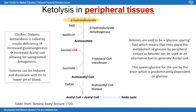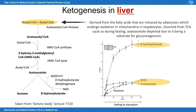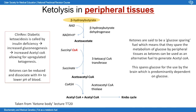A key clinical relevance here is diabetic ketoacidosis (DKA), which occurs in insulin deficiency. Low insulin increases the rate of gluconeogenesis, shunting more acetyl-CoA into the ketogenesis pathway. Increased ketogenesis means more ketones accumulate in the blood; since ketones can dissociate to release protons or be converted to carboxylic acids, they lower blood pH, causing acidosis. This presents with confusion and hyperventilation as a compensatory mechanism, and is normally treated with insulin.